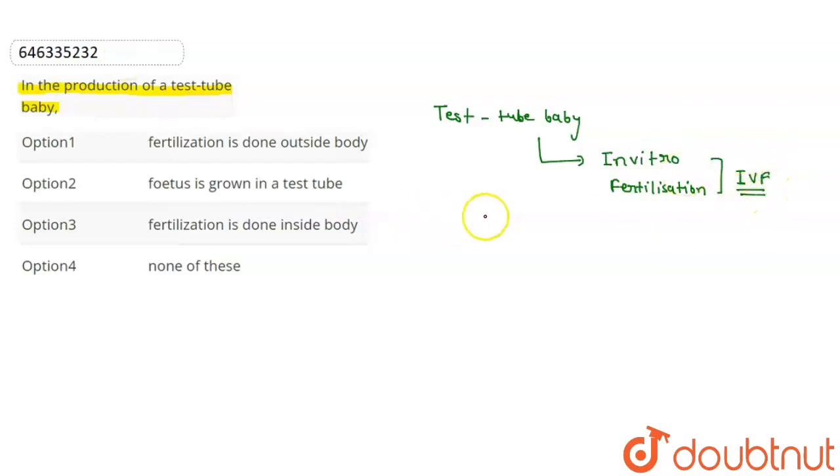So, what is the process of test tube baby? There is a male gamete and a female gamete. This male and female gamete, outside the body, they can undergo fusion. Fusion happens in the test tube.